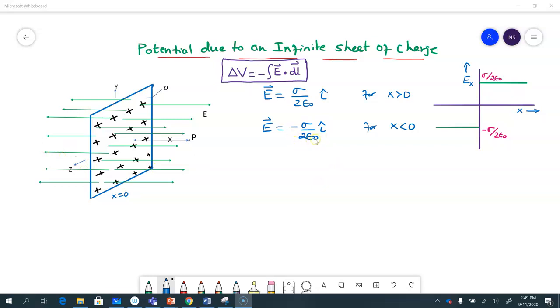And if I try to plot the x component of the electric field, which is the only component we have here, as a function of x, you can see there is a discontinuity in the electric field. It's negative sigma by 2 epsilon 0 for x negative and positive sigma by 2 epsilon 0 for x positive. So the electric field sort of jumps by an amount of sigma by epsilon 0—that's the discontinuity in the electric field right at the surface. So the surface is at x equals 0.